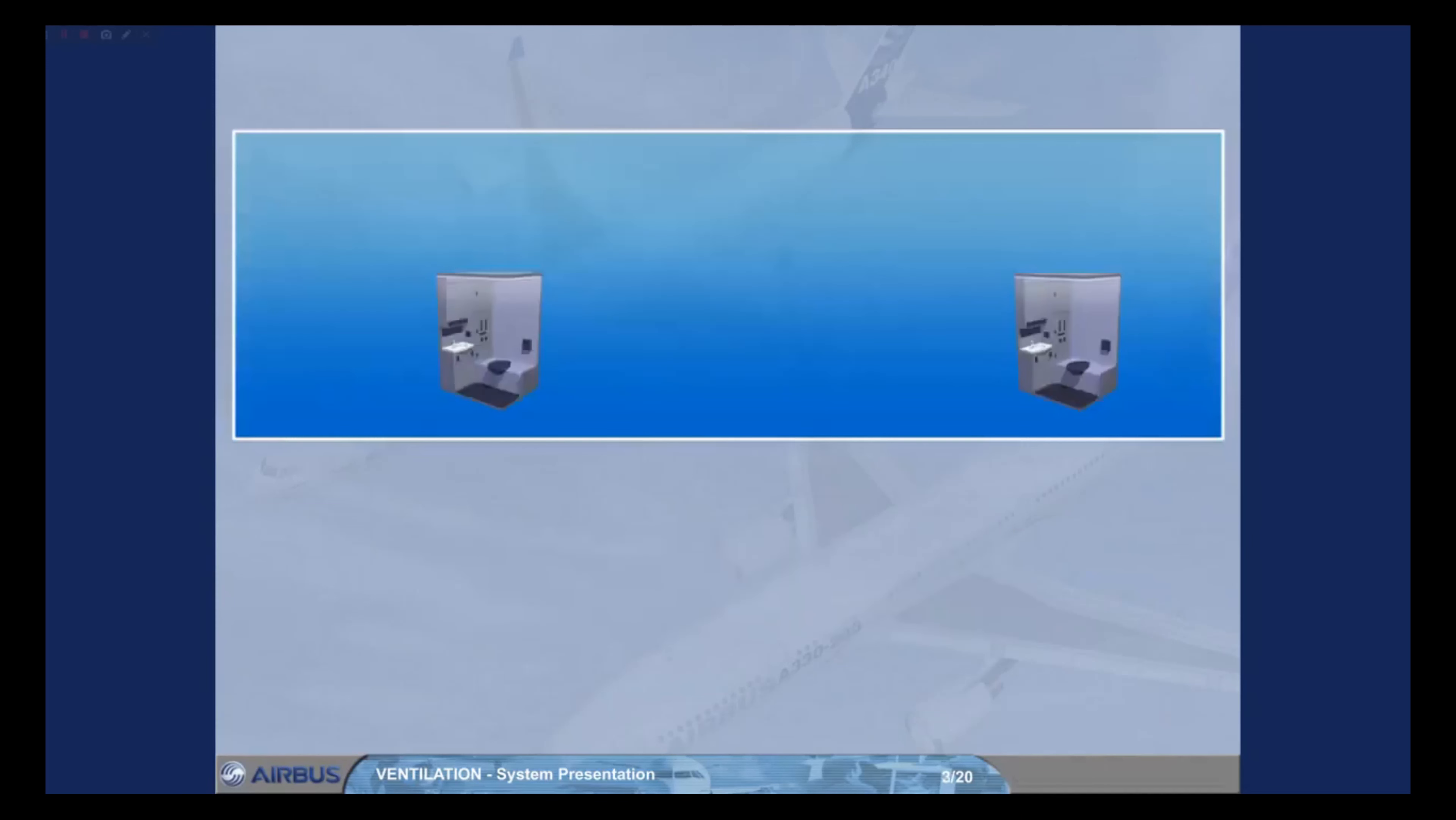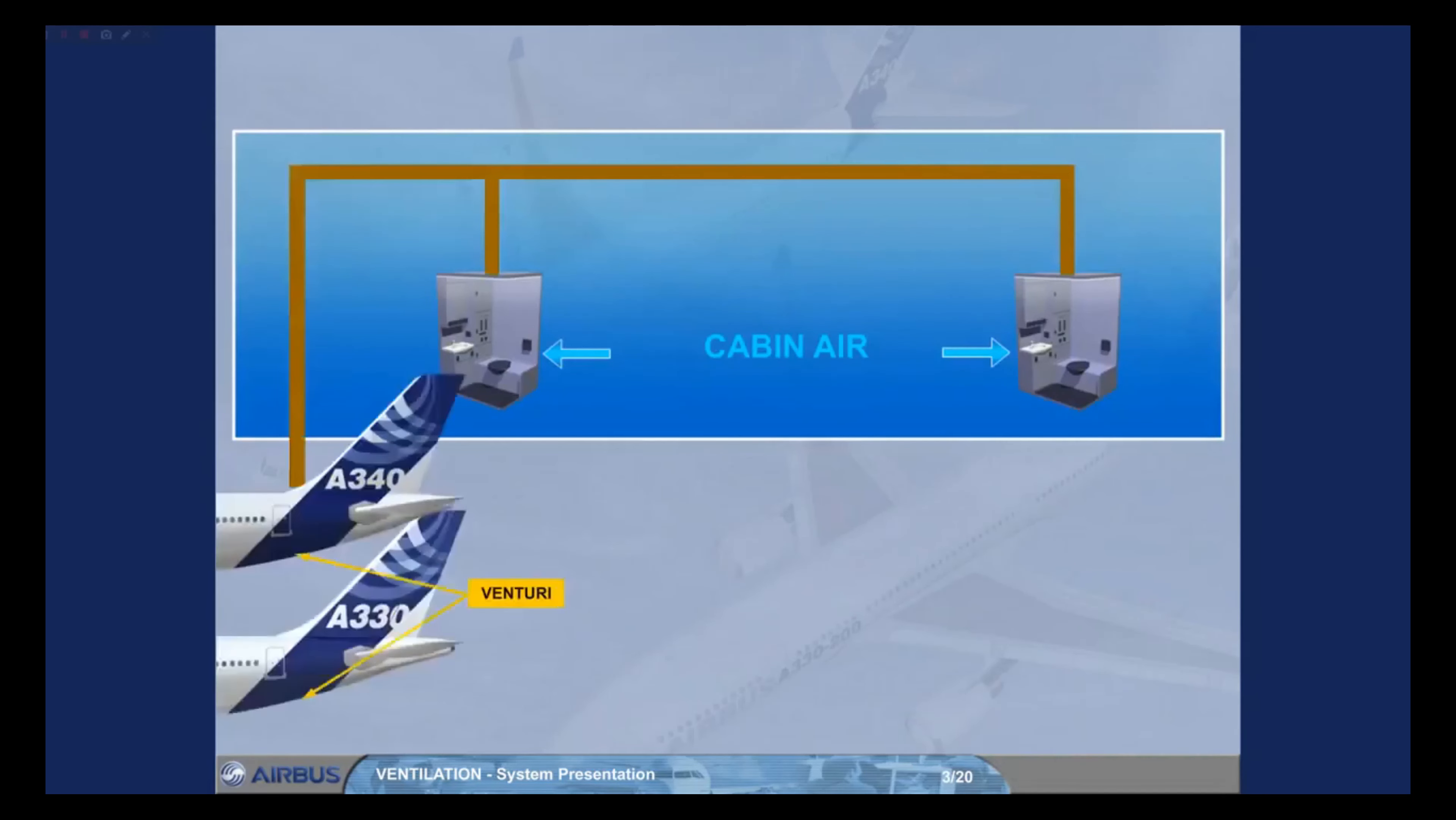The lavatory and galley system is completely automatic. Cabin air passes through the lavatory and galley areas and is removed from these areas to overboard through a venturi. The air extraction is performed by differential pressure or by an extraction fan.